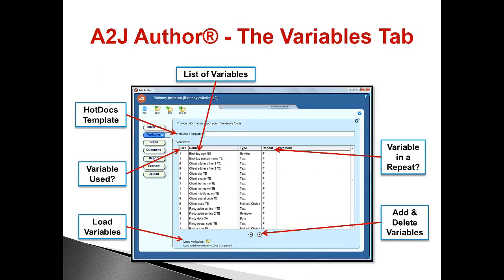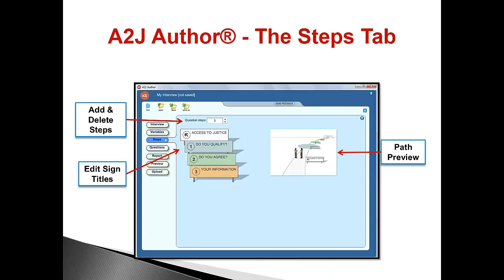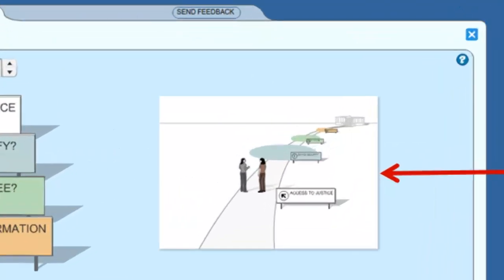Here is the variables tab. From this tab you can also add and delete variables as well. The third tab is the steps tab. The steps act as the main outline for your guided interview. They give the end user a feeling of progression through the A2J guided interview. On this tab you can add new steps with the question steps drop-down. You can have up to 12 steps. Each step however can have an unlimited number of questions. Think of the steps as the main bullet points in an outline. You can also on this tab edit the step name and preview the path that your end user is going to see. An A2J guided interview comes preloaded with four steps. On this tab you can add more steps, delete steps, or rename the steps to specifically fit your guided interview. The more steps you add the further away the courthouse will get. You can see how far away that courthouse is on the path preview to the right.